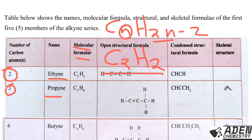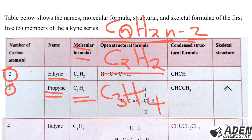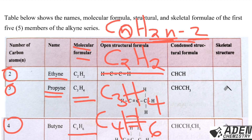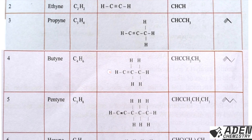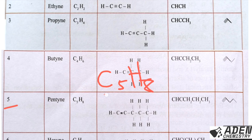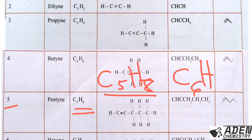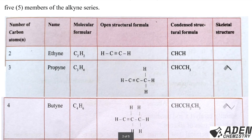For butyne with four carbon atoms: C₄H₆ (four times two is eight, minus two is six). For pentyne with five carbon atoms: C₅H₈ (two times five is ten, minus two is eight). For hexyne with six carbon atoms: C₆H₁₀ (two times six is twelve, minus two is ten). You can continue to derive the molecular formula for heptyne, octyne, nonyne and so on.